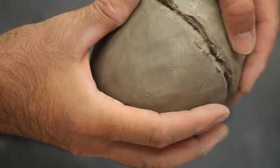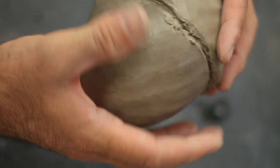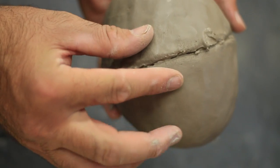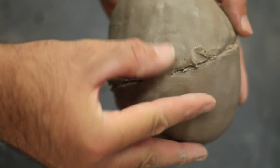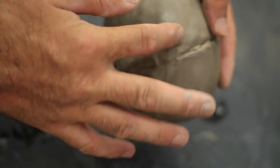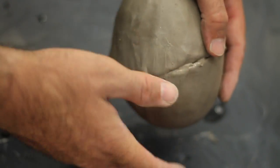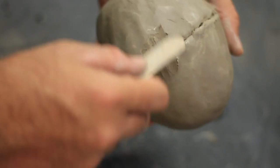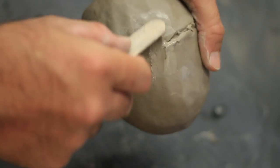After scoring and putting slip or water on the rims, you can start to join them together. Some people like to use their finger to join them together. Other people like the popsicle stick. I find the popsicle stick to be more effective. Sometimes the slip or the water that's on the rim causes my finger to just slide over the joint and not join it together. So I find that I like the popsicle stick better, but whatever works for you, you can use.